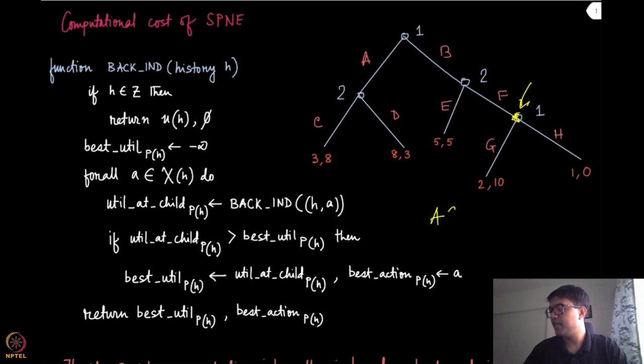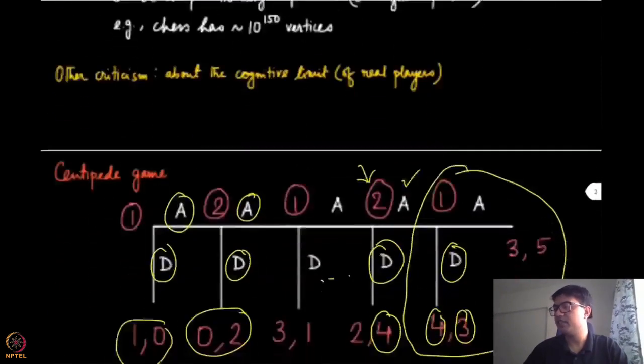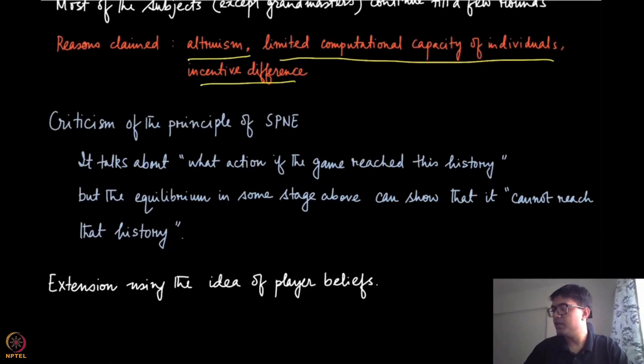But the subgame perfect Nash equilibrium, so we have seen this AG comma CF to be the subgame perfect Nash equilibrium. And if this player, the first player is playing A, then there is no reason to think that it will ever end up in this node. So a player who is playing the action A at the first round, that is taking a completely different path in the game tree and it will never reach a state which will give the opportunity to the same player to play G again. So then what's the point of giving this kind of a guarantee which itself says that you cannot reach that particular node?